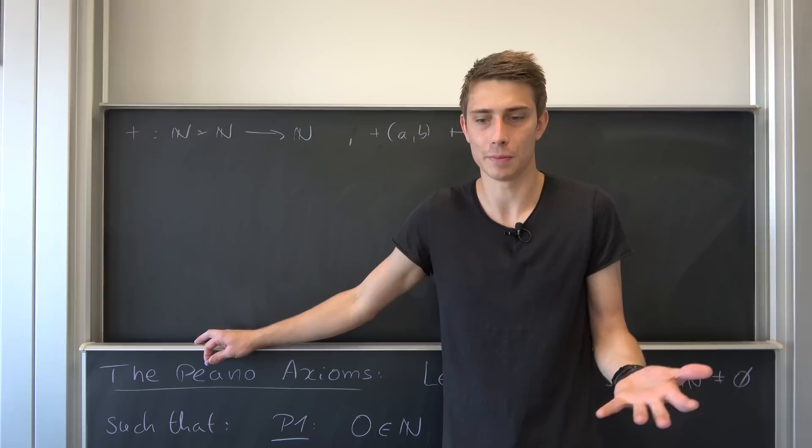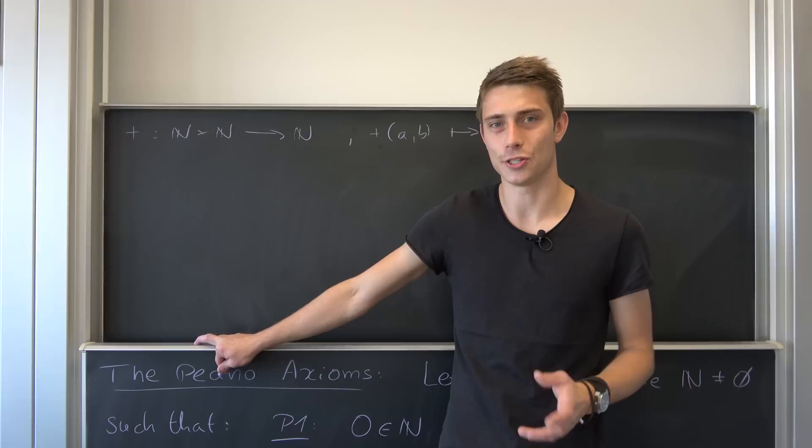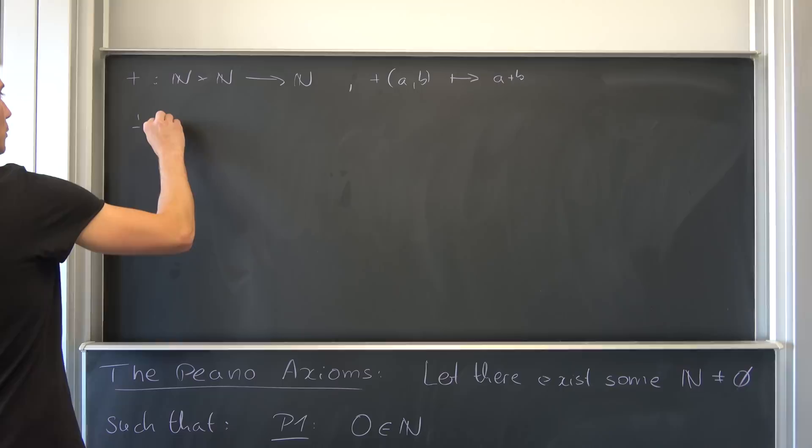But this right here also has to underlie some rules. Otherwise, we can't really prove anything in the end. So how do we as humans understand the natural numbers, the addition on the natural numbers?